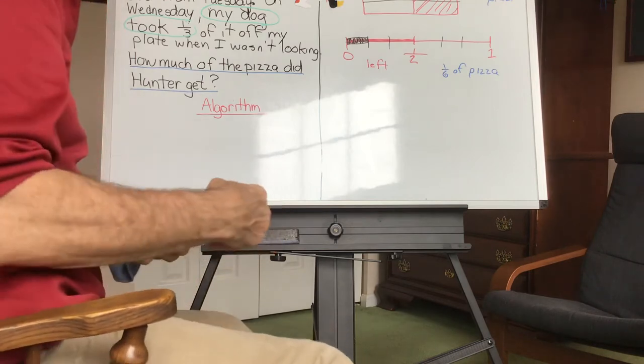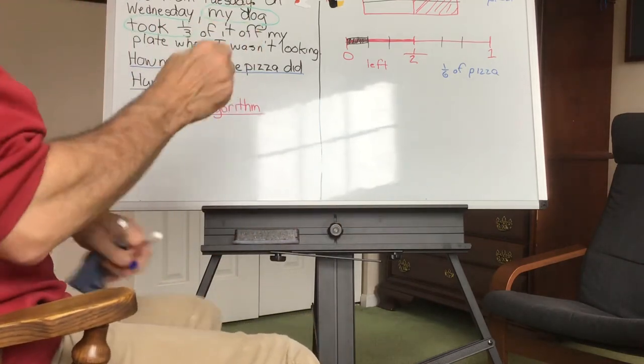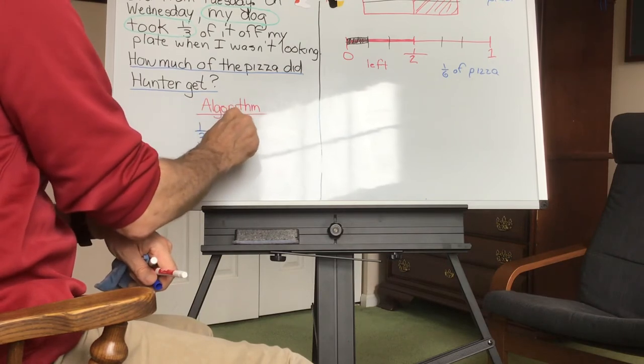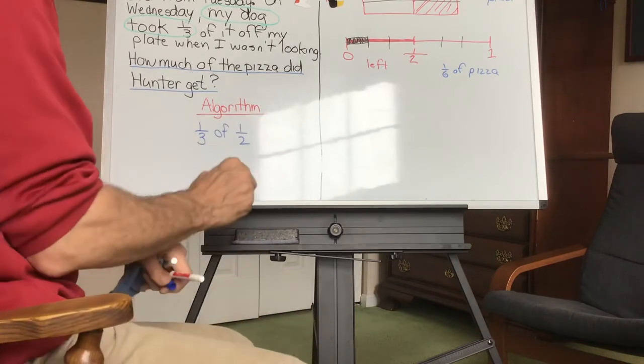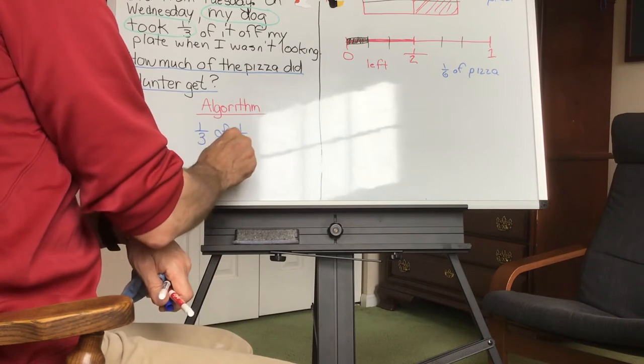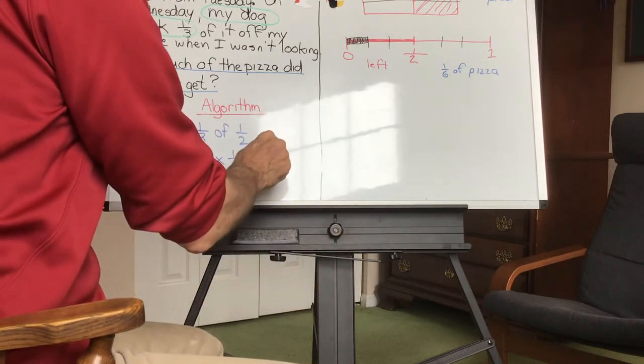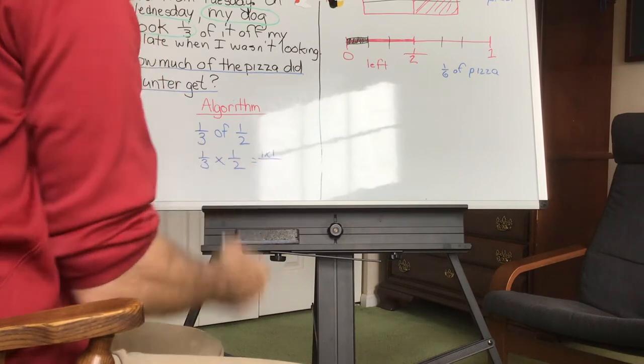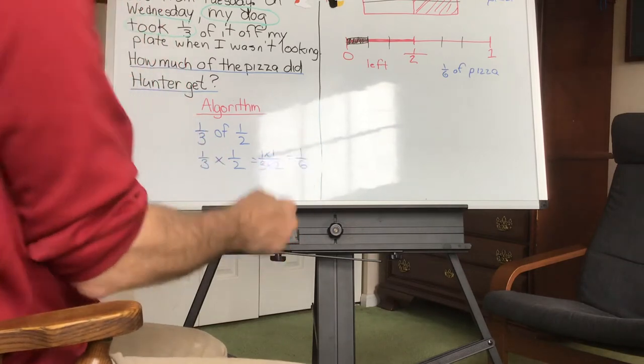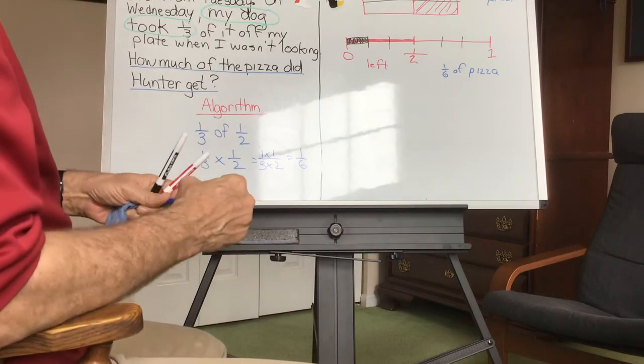Let's look at how could we show this with an algorithm? Well, I wanted to find Hunter ate one third of one half. Which we said the other day, in math, is the same as one third times one half. And when we multiply fractions, numerator times the numerator, one times one. Denominator times the denominator, three times two. And what did we get? One sixth. And so, two different ways to show it, and another way to actually solve it mathematically.